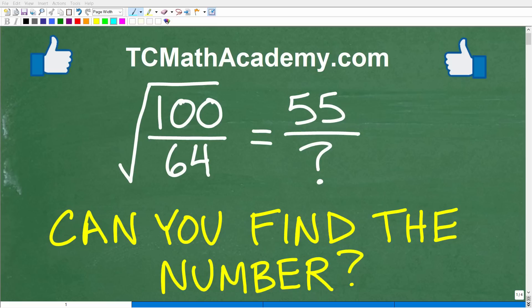Okay, so do you have the math skills to figure out what this mystery number is? I'm talking about this number right here where this question mark is at. Matter of fact, let me go ahead and go over this problem so there's no confusion. What we have here is the square root of 100 divided by 64, and that's equal to 55 over this mystery number.